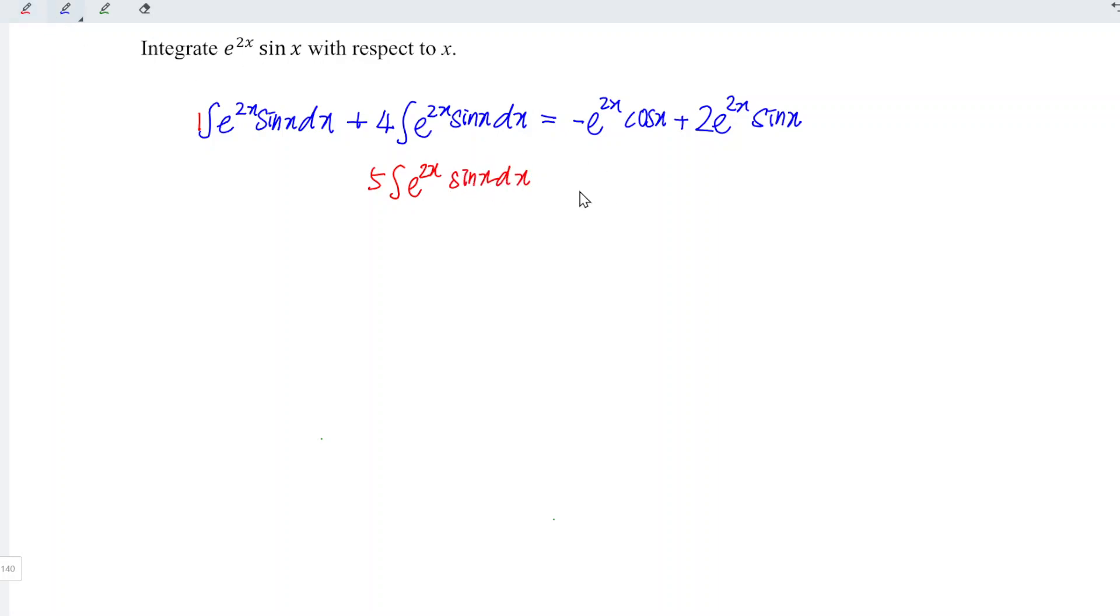And this is equal to the right-hand side. Since we have common factor e to the power of 2x, we can factorize. And this remains minus cos x plus 2 sin x.